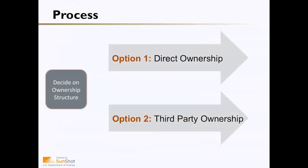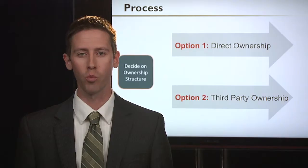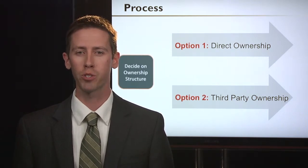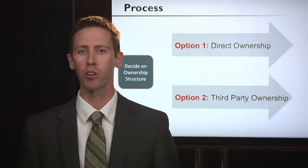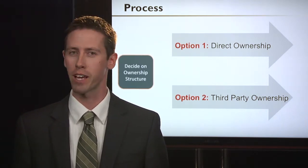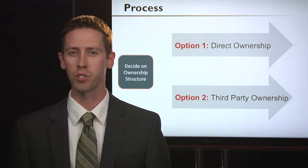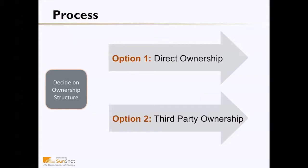There are two different options for a municipality that wishes to have solar generation on their own facilities, be it a school or the town hall. Option one is direct ownership and option two is third-party ownership, and there are advantages and disadvantages to each of these two options.